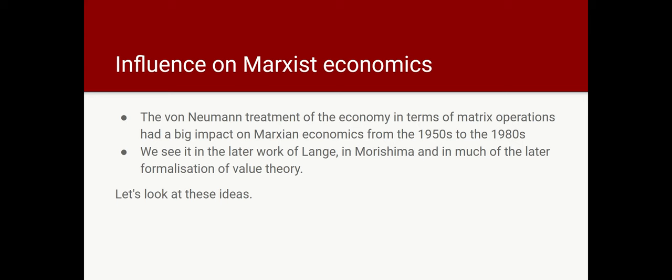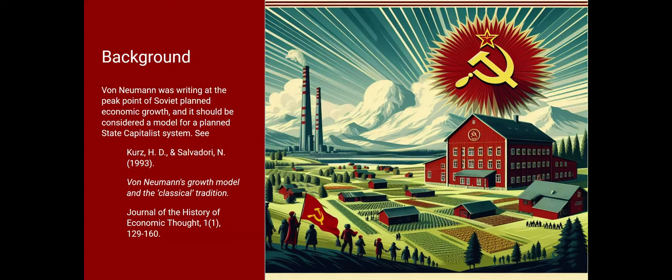The von Neumann treatment of the economy in terms of matrix operations had a very big impact on Marxian economics, roughly from the 50s to the 80s. We see it in later publications by Lange and Morishima, and it underlies much of the subsequent formalization of Marxist value theory. And I'm going to look at it in so far as it relates to growth theory, not as it relates to value theory.